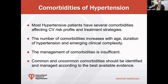Currently, a lot of energy has been spent to treat hypertension and improve blood pressure control, but the management of comorbidities is still insufficient, and some of them are not usually treated in the right way. For this reason, in a modern approach to hypertension, common and uncommon comorbidities should be identified in the hypertensive patient and managed according to the best available evidence, as guidelines would suggest.